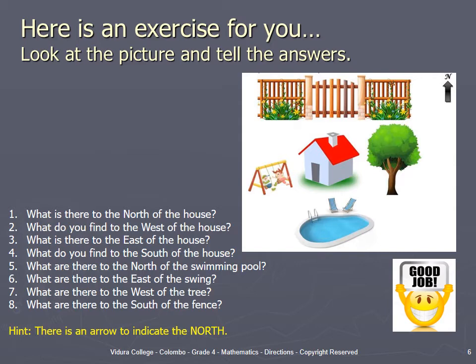Question number 5: what are there to the north of the swimming pool? Question number 6: what are there to the east of the swing? Question number 7: what are there to the west of the tree? Question number 8: what are there to the south of the fence?